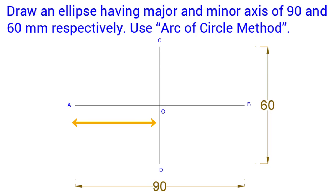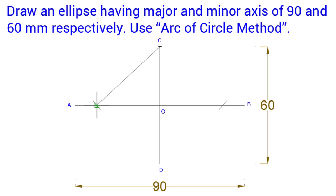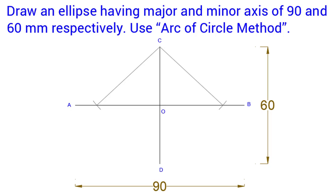Now, with the help of a compass, take distance AO as a radius and from point C as a center, draw an arc on both sides of the major axis. From point C, draw a line connecting to the arc points on both sides. We will name the arc points as point F1 and point F2.